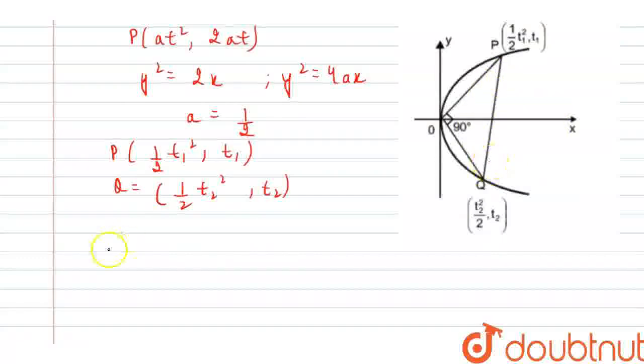Now, proceeding forward, since OP is perpendicular to OQ, we know that the product of t1 and t2 would be equal to minus 4.